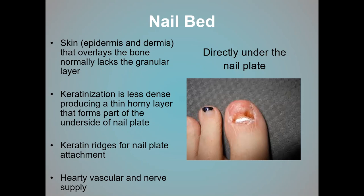The nail bed lies directly under the nail plate and consists of skin — both epidermis and dermis — with bone beneath it. A bony prominence can push up on the nail bed, which can then deform the nail plate. The amount of keratinization on the nail bed differs from other parts of the skin, which becomes important when there's trauma to the nail bed. Within the nail bed there are ridges of keratin that keep the nail plate attached, and it's important to maintain that healthy relationship.